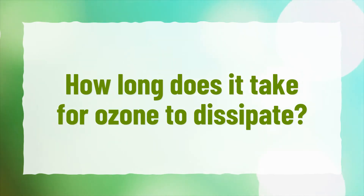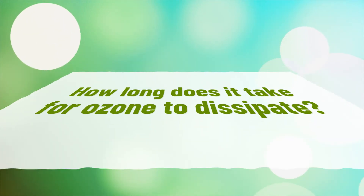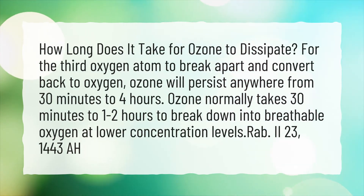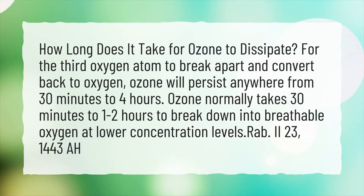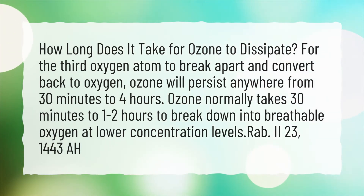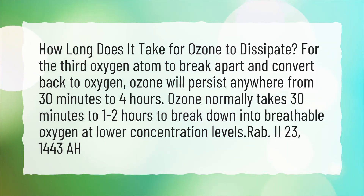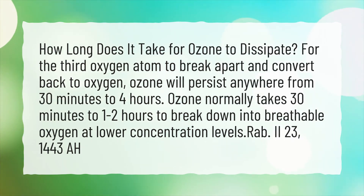How long does it take for ozone to dissipate? For the third oxygen atom to break apart and convert back to oxygen, ozone will persist anywhere from 30 minutes to 4 hours. Ozone normally takes 30 minutes to 1 to 2 hours to break down into breathable oxygen at lower concentration levels.